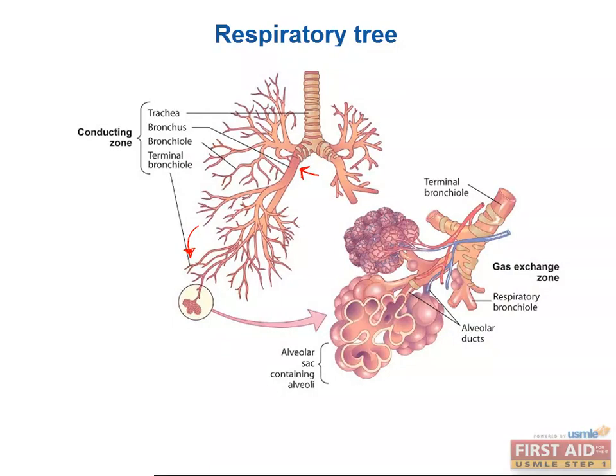In the conducting system, pseudostratified ciliated columnar cells are important for sweeping mucus secretions out of the lung. These cells are damaged by the products of cigarette smoking, which is why smokers are more susceptible to pulmonary infections than non-smokers. These ciliated cells stop at the respiratory zone, and it's the alveolar macrophages that clear debris there.